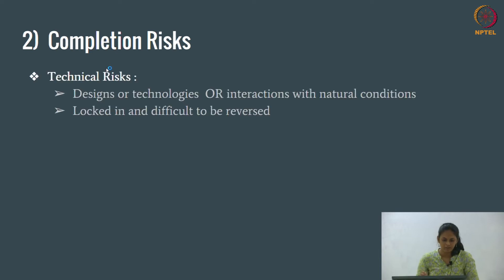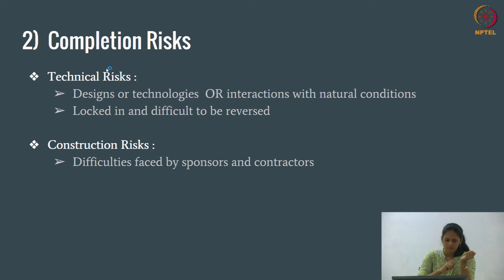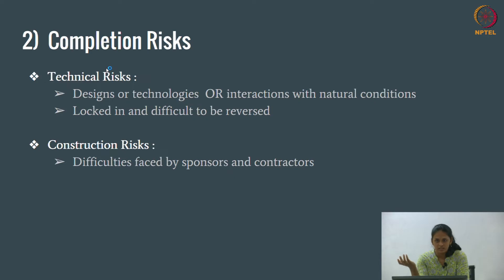The second category is completion risks. Technical risks arise when designs are complicated or technologies are complex. Even if technologies are complex, we might achieve them, but conditions might turn out bad — and it gets worse because once you are stuck, it's difficult to come back. For example, if something goes wrong mid-tunneling, you can't simply stop. Construction risks are the difficulties faced by sponsors and contractors. If it's a risky project, the construction becomes risky.